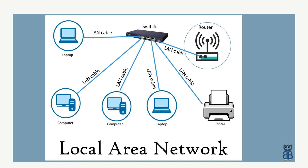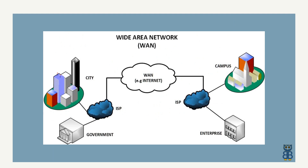A wide area network, or WAN, can be defined in one of two ways. The textbook definition is a network that spans large geographical locations, usually to connect multiple LANs. A more practical definition is a network that traverses a public or commercial carrier using one of several WAN technologies. A WAN is often under the administrative control of several organizations or service providers.